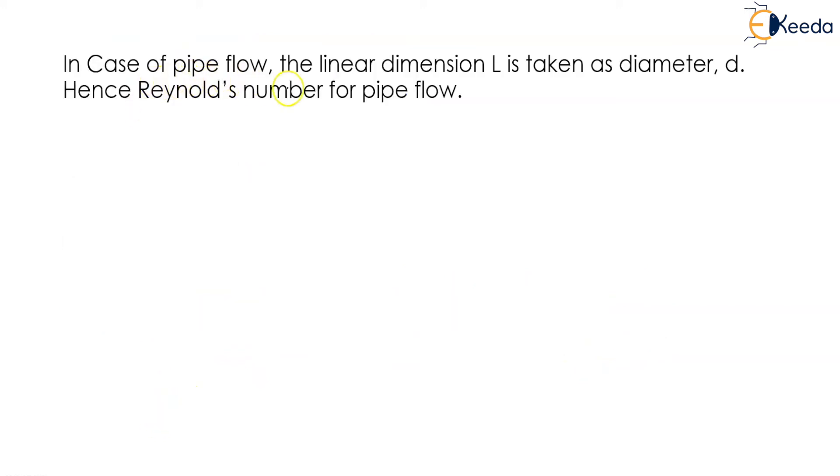In case of pipe flow the linear dimension L is taken as diameter d. Hence the Reynolds number for pipe flow is Re equal to v into d upon ν which is also equal to ρvd upon μ.